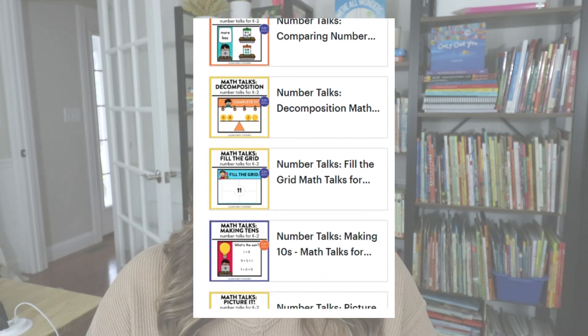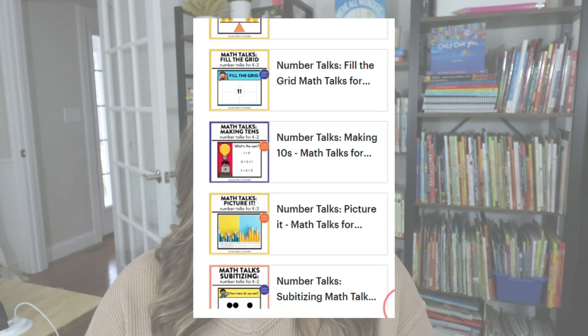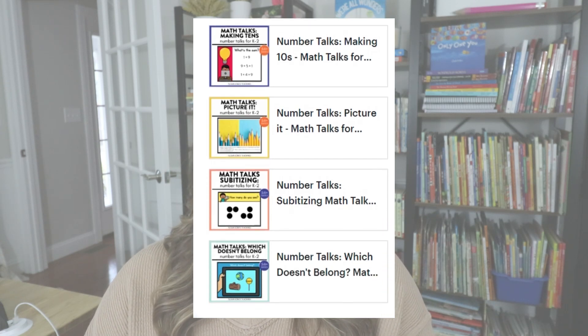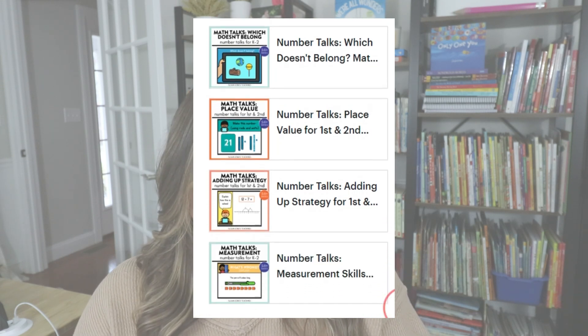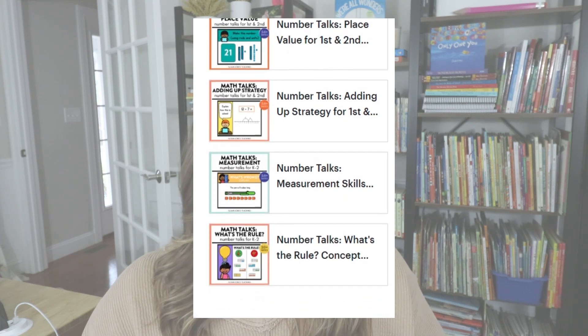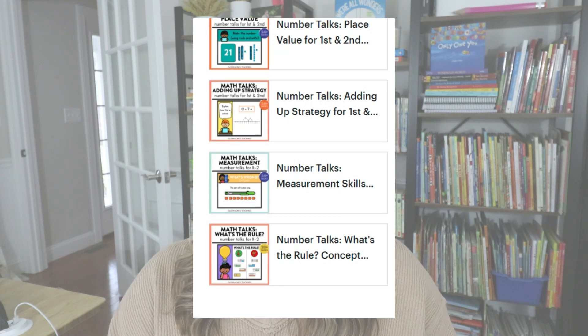Students can work on subitizing, comparing numbers, and discuss which number or object doesn't belong and why. They can play fill the grid to figure out different ways to make a number. We focus on the strategy of making tens, decomposition. I have picture prompts, place value slides, adding up strategy slides, and specific measurement ones, plus a what's-the-rule math talk bundle where students use concept attainment. I also sell each of the different strategies and skills separately for about two dollars each.